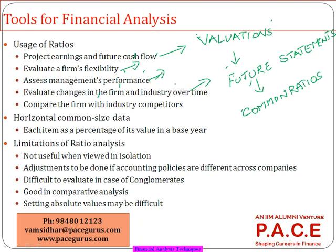We can also compare our firm with the industry and with competitors over time. I can take a number called industry average and see whether I am much better or worse than the industry average, and in which areas. That will tell me what are my areas of improvement for the next year — that is the way management targets continuous improvement. Ratios are more powerful for all those reasons. We have already seen one model of ratios — the common size analysis, both for P&L, balance sheet, and cash flow — expressing everything as 100.